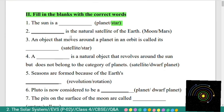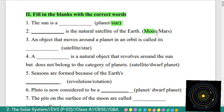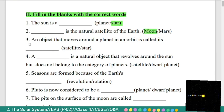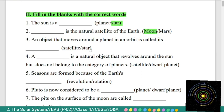Second: dash is the natural satellite of the Earth. The answer is Moon. Third: an object that moves around a planet in an orbit is called its satellite.